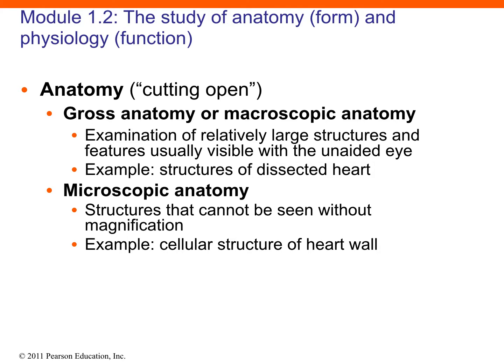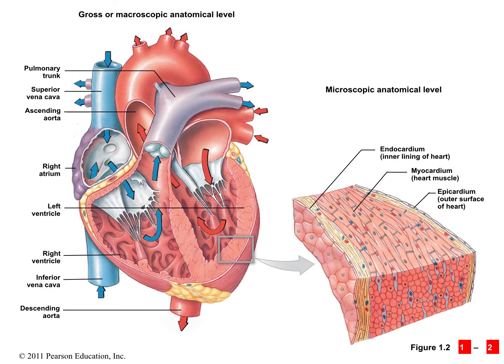Microscopic anatomy is studying the structures that cannot be seen with the naked eye and that need a microscope. Going into the cellular level — looking at the cardiac muscle cells, connective tissue at the cellular level, or adipose tissue such as single fat cells around the heart — that's microscopic anatomy. We need a microscope in order to see those single cells.